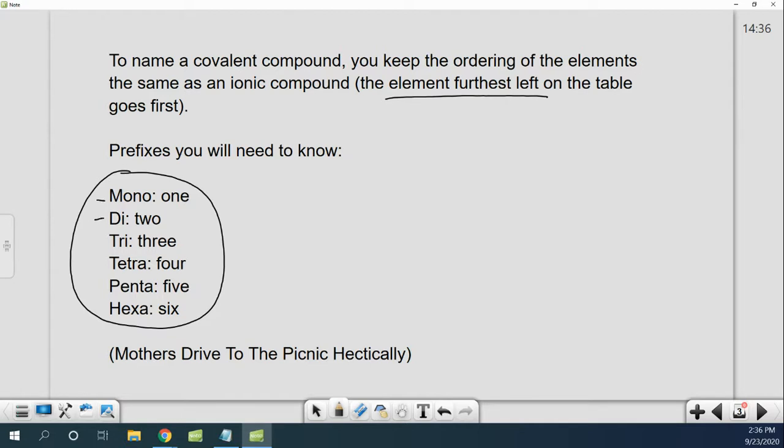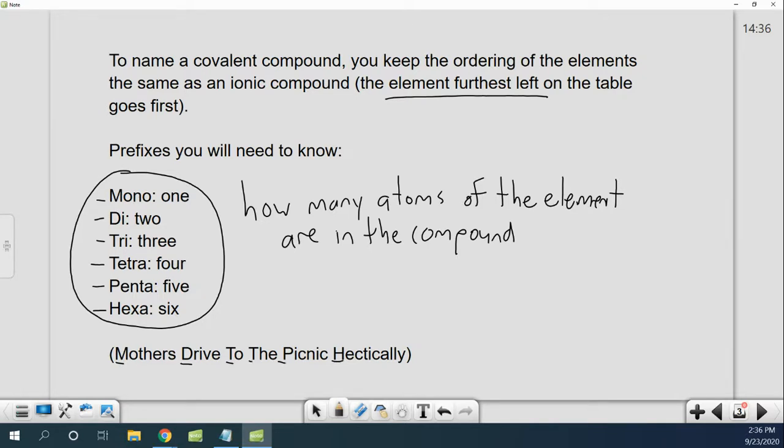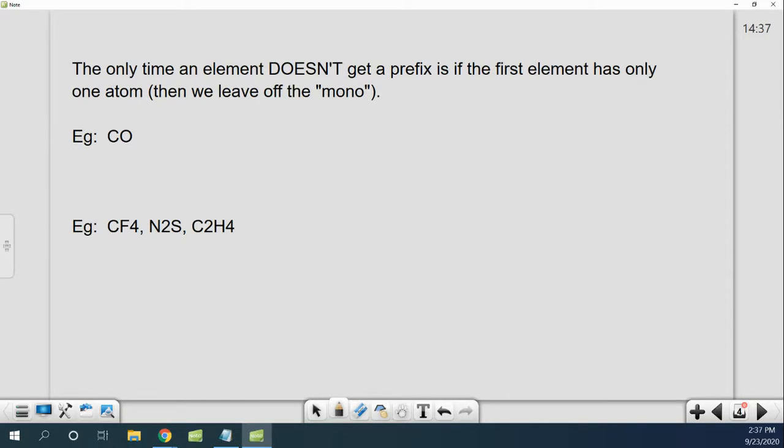And you're also going to need to know some prefixes. Mono means one, di means two, tri means three, tetra means four, penta means five, hexa means six. And those prefixes tell you how many atoms of the element are in the compound. If you need help remembering, mothers drive to the picnic hectically gives you the first letters.